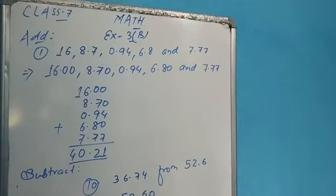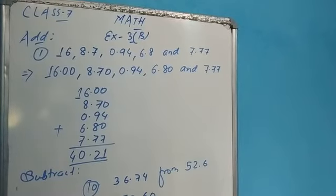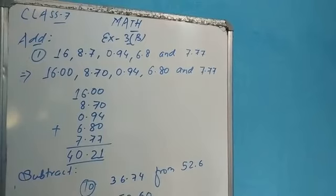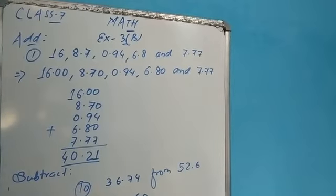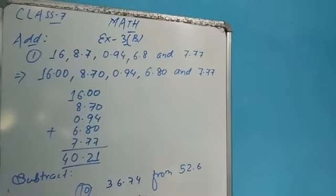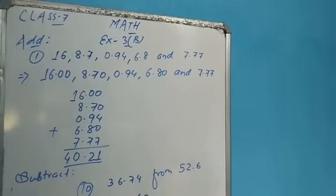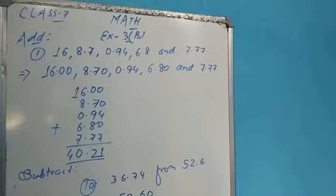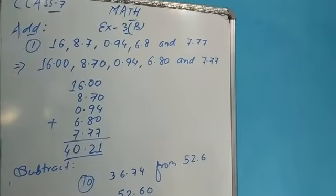We can write all the numbers: 16 becomes 16.00, 8.7 becomes 8.70, 0.94 stays 0.94, 6.8 becomes 6.80, and 7.77 stays 7.77. Now you may add these numbers this way.